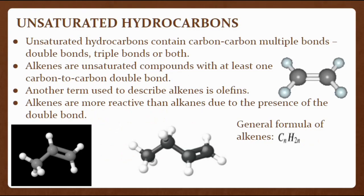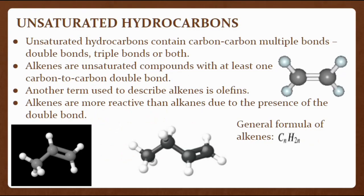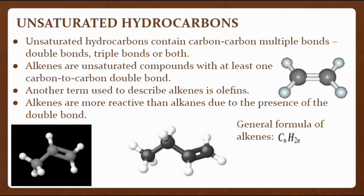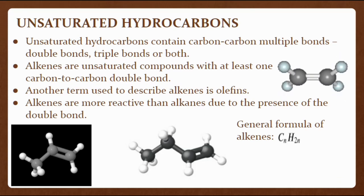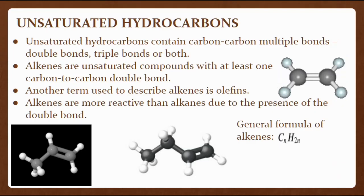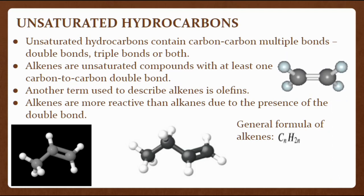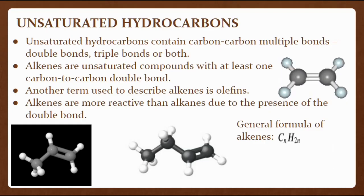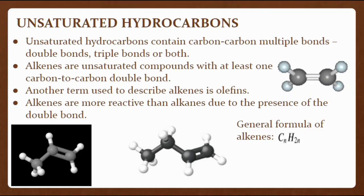Unsaturated hydrocarbons contain carbon-carbon multiple bonds — double bonds, triple bonds, or both. Alkenes are unsaturated compounds with at least one carbon-to-carbon double bond. Alkenes are also known as olefins, after the original name for ethene which is olefin gas. Alkenes take part in a wide variety of chemical reactions and are found as parts of many highly colored systems. Alkenes are therefore more reactive than alkanes due to the presence of the double bond. The general formula of alkenes is CₙH₂ₙ.